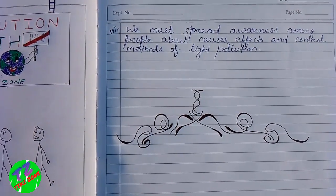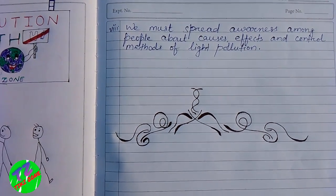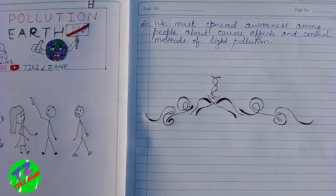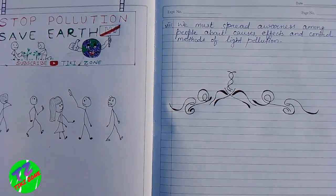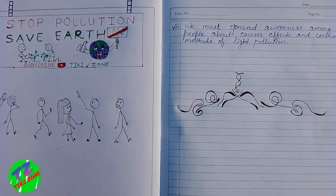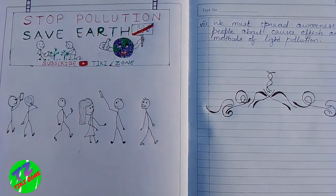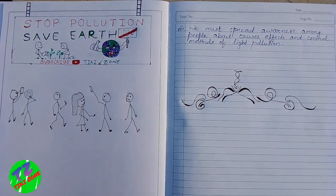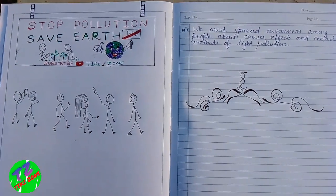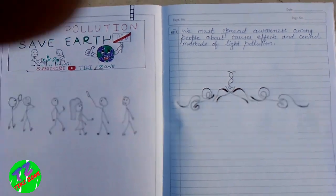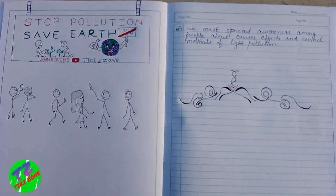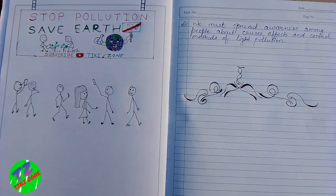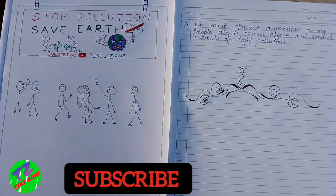We must spread awareness among people about the causes, effects and control methods of light pollution. So these are the causes, effects and control methods of light pollution discussed in this video. See you all in the next video with another topic. Till then, take care, and don't forget to subscribe to this channel. Thank you for watching.